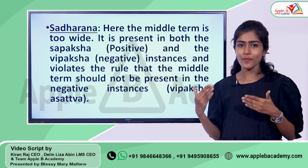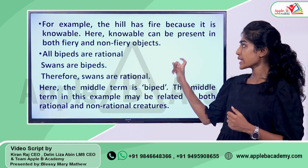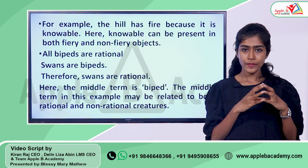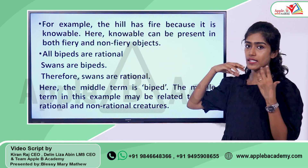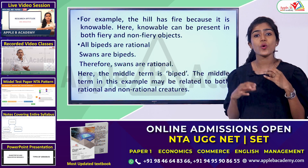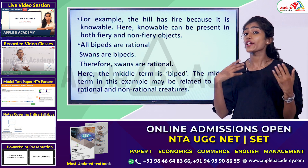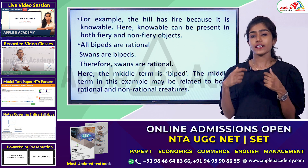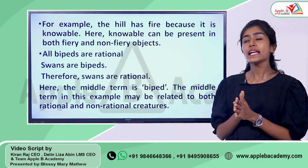Let's take an example to understand this concept. Consider the argument: 'the hill has fire because it is knowable.' The hill is the minor term, fire is the major term, and 'knowable' is the middle term — the reason or hetu for establishing the argument. The middle term here is the reason why we say the hill has fire.